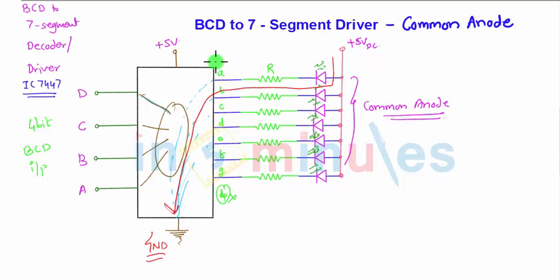And these are the current limiting resistors. So that's all about the BCD to 7 segment driver in common anode configuration and thank you for watching in 5 minutes and stay tuned for more videos. Bye-bye.